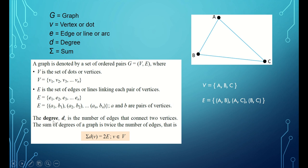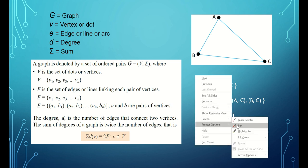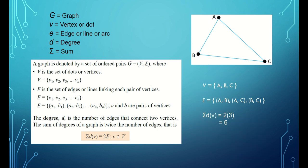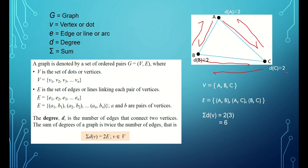D is the number of edges connecting two vertices, and the sum of degrees of a graph is twice the number of edges. The number of edges here is 3, so the sum of degrees is 2 × 3 = 6. You can also verify this by finding each degree individually: degree of A = 2, degree of B = 2, degree of C = 2, giving 2 + 2 + 2 = 6.